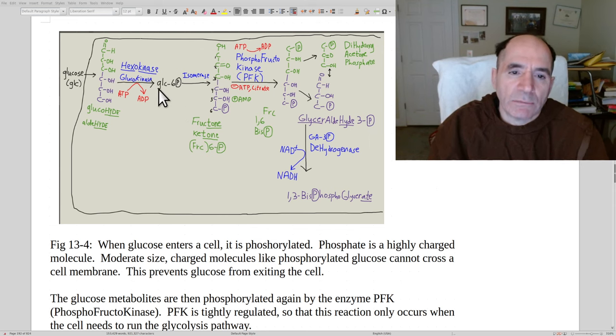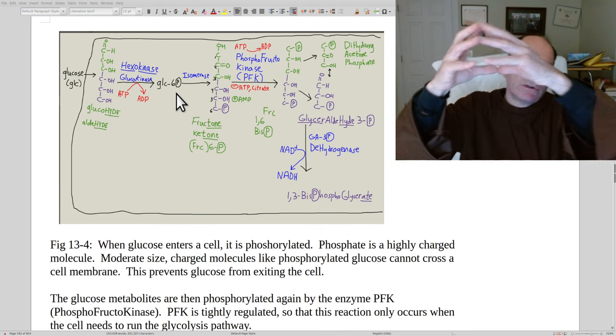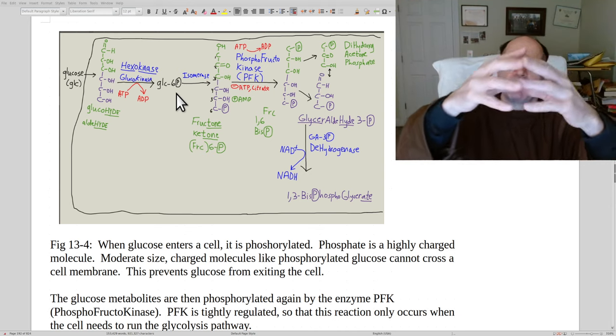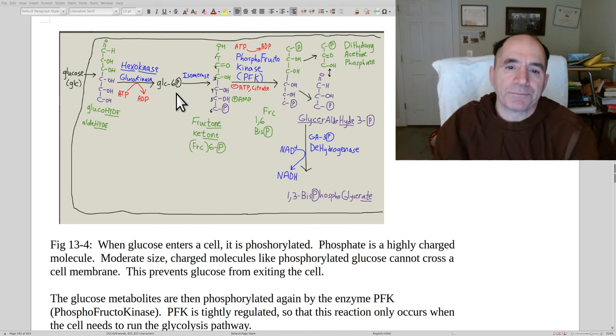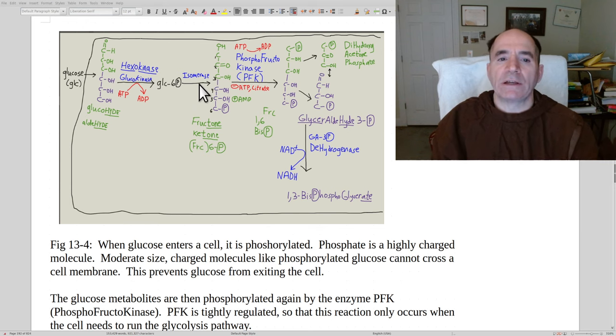First of all, glucose comes into the cell. Once it comes into the cell, the cell wants to trap it. And the way the cell can trap it is by phosphorylating. So it adds a phosphate to the glucose. So the glucose becomes glucose-6-phosphate. Now that phosphate means there's a big negative charge on there and it makes it bulky. So it won't be able to exit out of the plasma membrane. It's going to stay inside the cell.